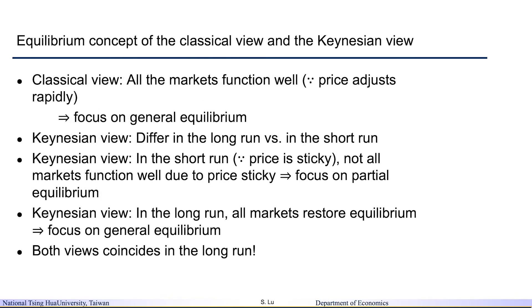Before we conduct the Keynesian type of analysis from the IS-LM perspective, we need to further discuss the equilibrium concept under the classical view and the Keynesian view. Under the classical view, we assume that prices adjust rapidly. Therefore, under the classical view, all markets will attain equilibrium in a very short time, and the equilibrium we discuss is generally the general equilibrium.